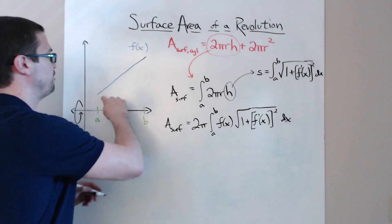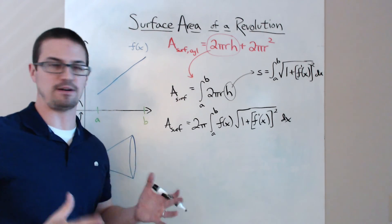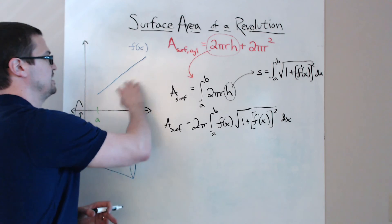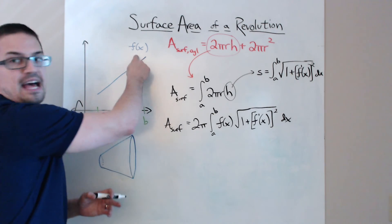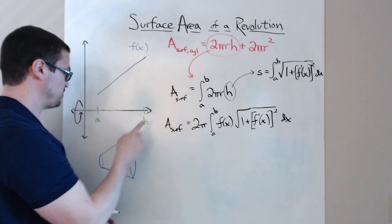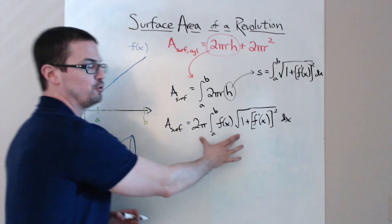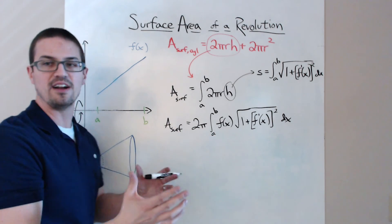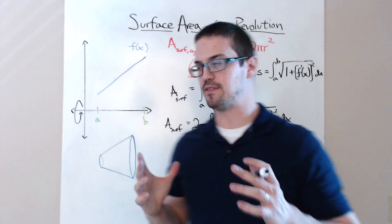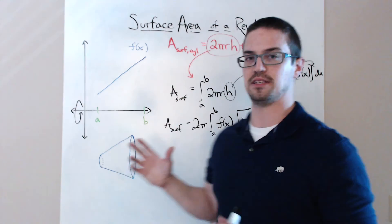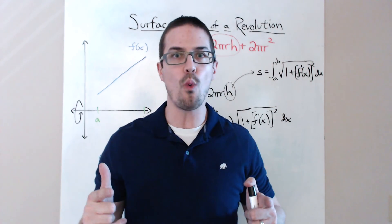This works as long as we know whatever function dictates that solid of revolution. In this case it's linear, but f of x can be anything. As long as you know f of x and the interval from a to b, you can use this equation to figure out the surface area of a solid of revolution. If you have any questions about anything in this video, let me know.